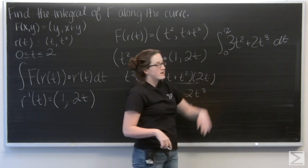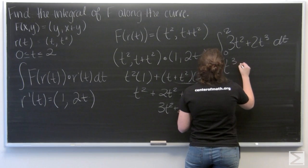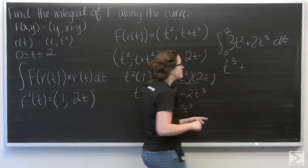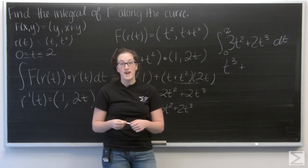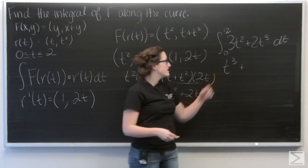So 3t squared is going to be t to the third. And 2t to the third is going to become 1 half t to the fourth. Right? Add 1 to my exponent and then divide by 4.